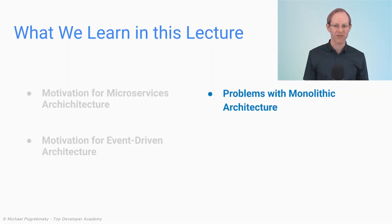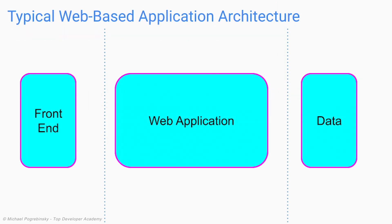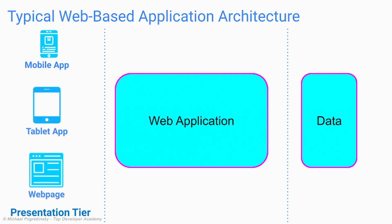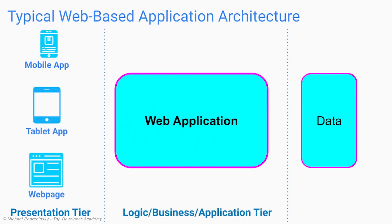Now that we got some motivation, let's talk about the problems we're trying to solve using microservices and event-driven architecture in the first place. If we think about the architecture of a typical web-based company, we can divide it into three logical and physical tiers. The first one is the presentation tier, which contains the client-side front-end code and runs on the user's mobile devices, tablets and web browsers. The second middle tier is called the logic tier, sometimes referred to as the application tier or the business tier. This part of the system runs all of our business logic that handles all the interactions between our users and our system.